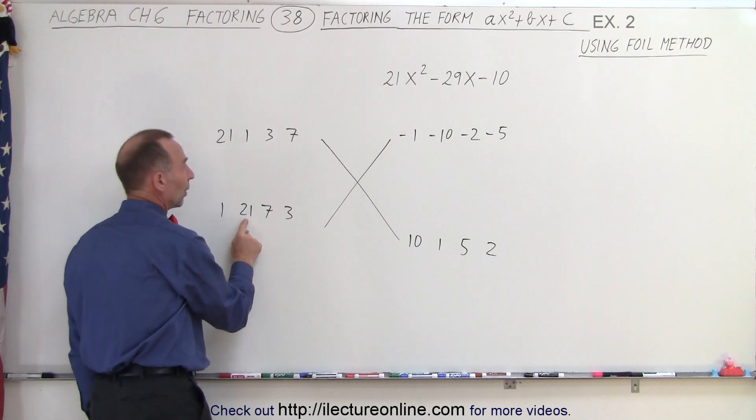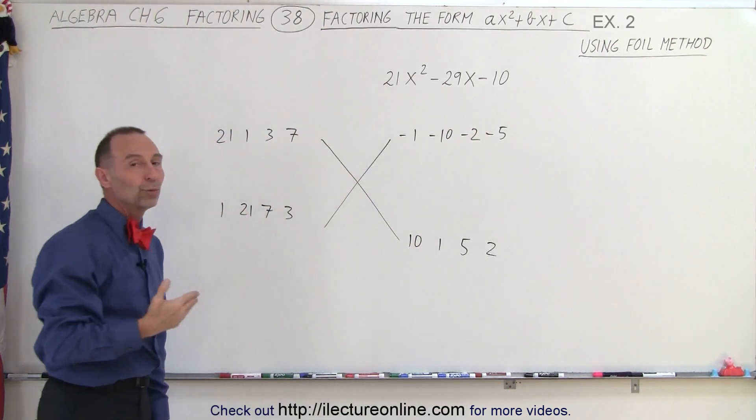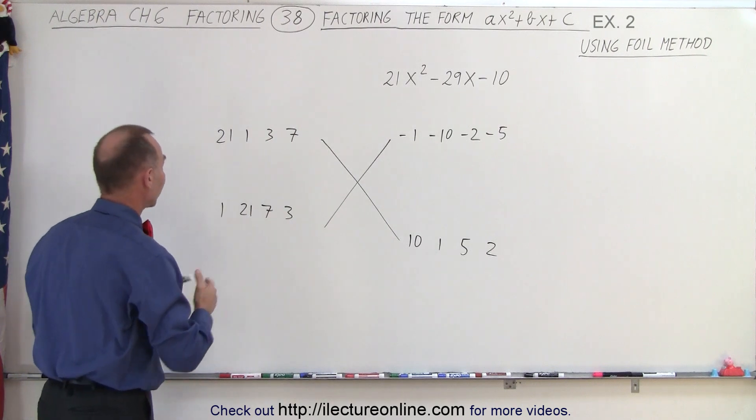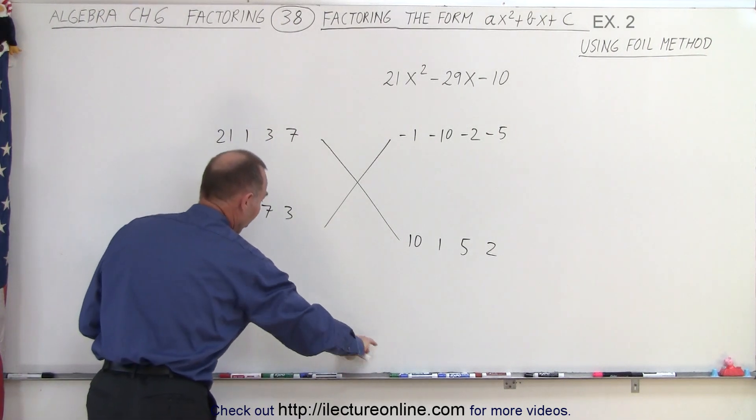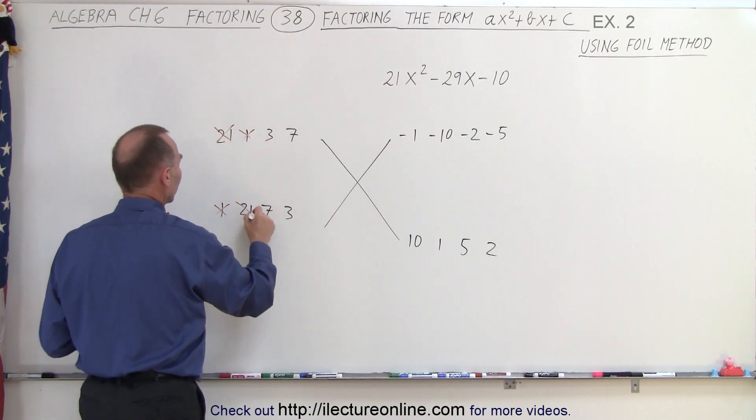And the next set, 21 times negative 10 gives us negative 210. Again, that's not a reasonable expectation. So it looks like the first two combinations are probably not a good choice, so we're not going to try those.